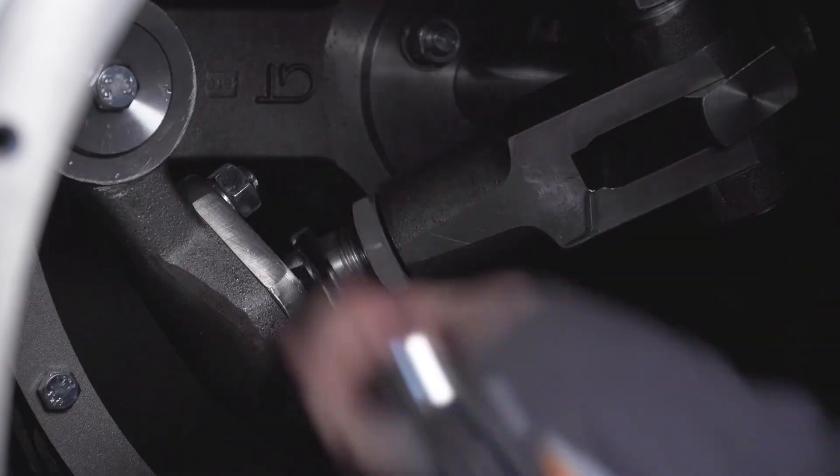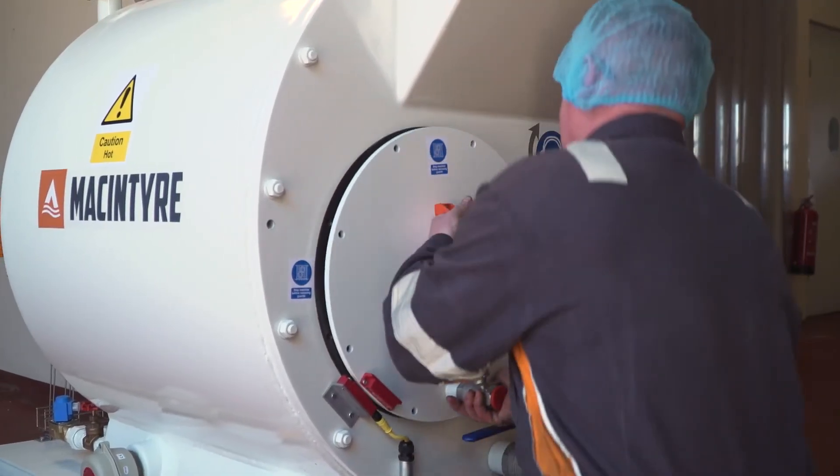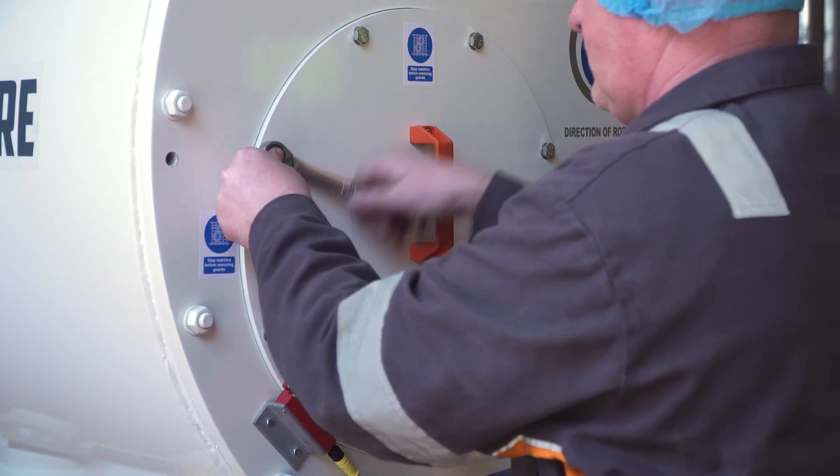Ensure that the lock nuts on all of the toggle arms are tight and secure. Refit the hatch. The machine is now ready for use.